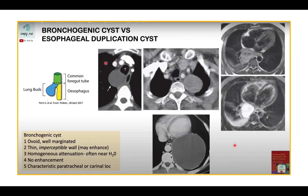For congenital anomalies, we differentiate bronchogenic cysts from esophageal duplication cysts by CT appearance. The bronchogenic cyst has a thin, imperceptible wall, while the esophageal duplication cyst has a portion of muscular wall and will therefore be a perceptible structure.